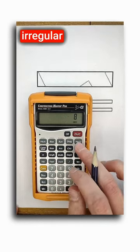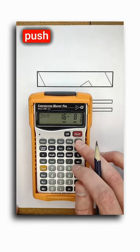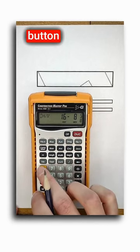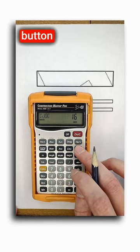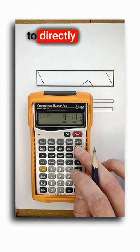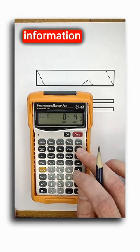Now if I have an irregular pitch I can enter that and then push the hip valley button and finally pushing convert before the jack button will allow me to directly access the irregular jack information I need.